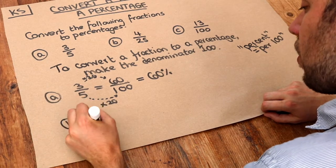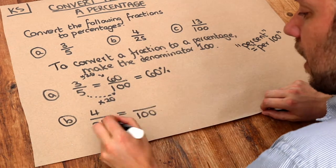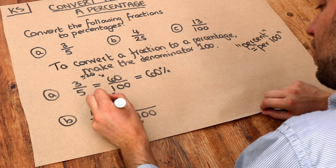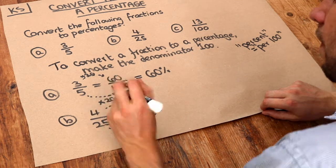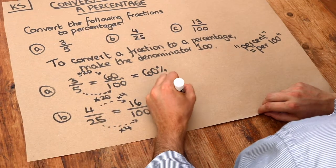4 over 25. We need the denominator to be 100. Now we multiply 25 by 4 to get to 100. So we have to do the same to the numerator. 4 times 4 is 16. So if it's 16 over 100, it's 16%.